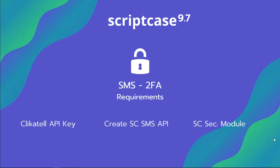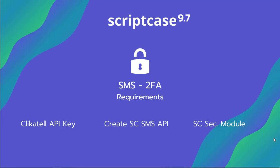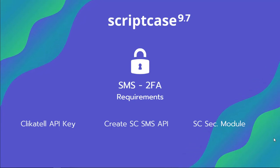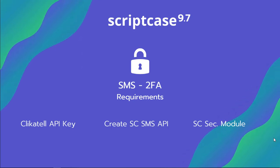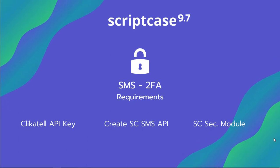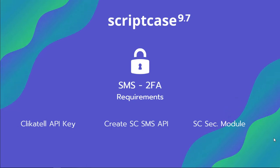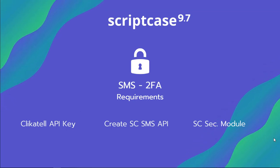Basically we need three things. The first one will be a Clickatel API — we're going to show the steps, but basically you need to create an account and no more complications over there. Then we're going to set up that key into Scriptcase. We have a specific tool called API, so we're going to create one and paste this key. And finally we need to create a security module and select this API key.